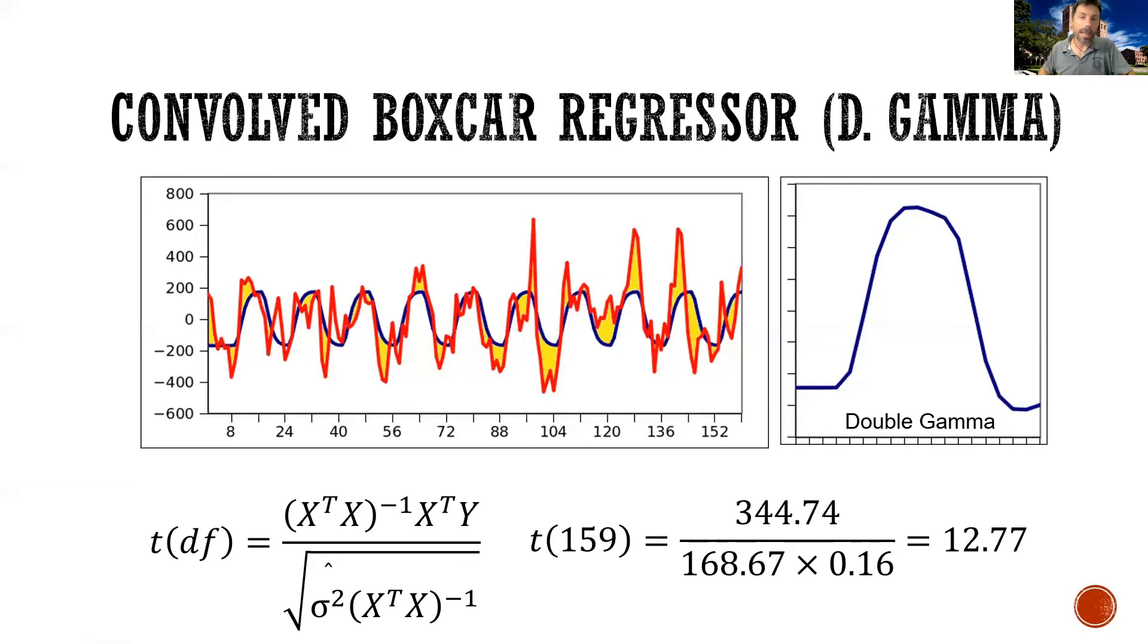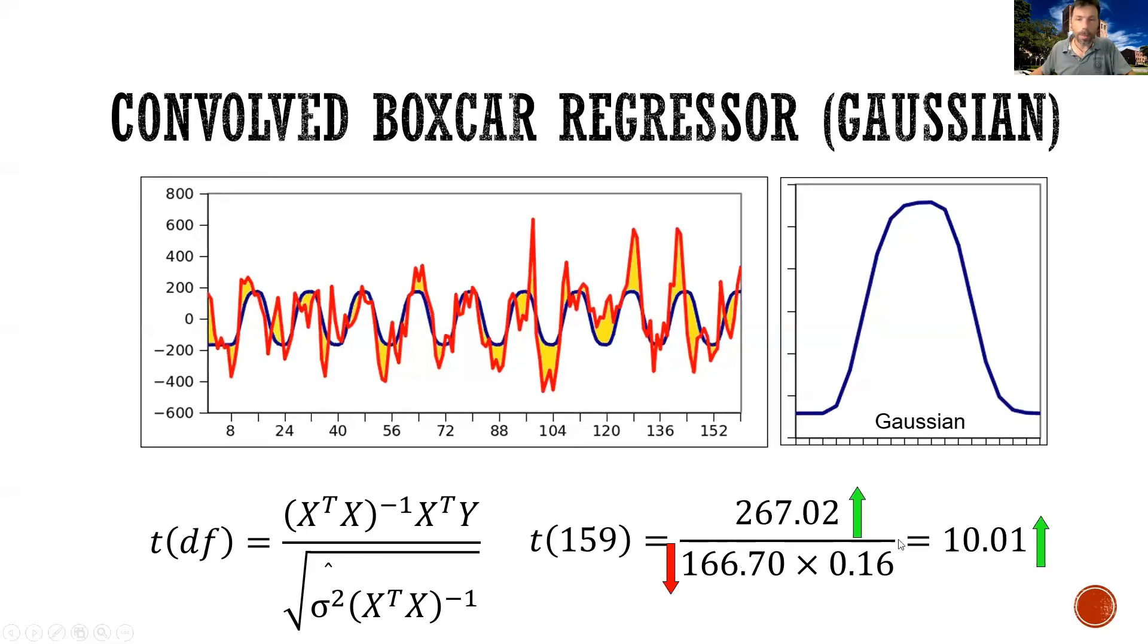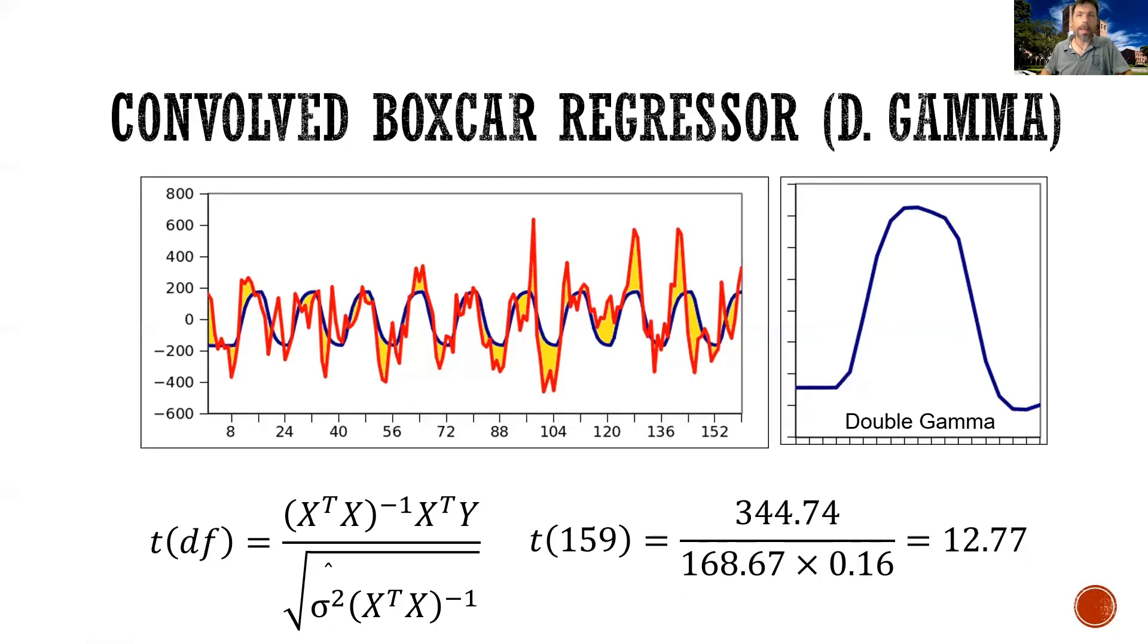And indeed, again, our values, our effect size, the beta, our parameter, goes from 267. So often, if you implement the double gamma as the convolving function, goes up. Variance goes up just a little bit, but our t-test again has gone up.